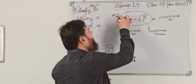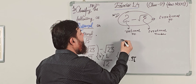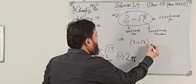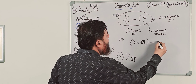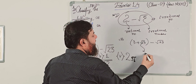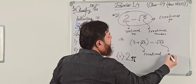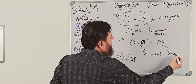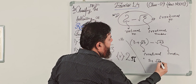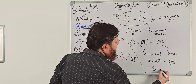So question number 1, first part: the answer is irrational. Now moving to the second one: 3 plus root 23 minus root 23. You see here root 23 is irrational and root 23 is also irrational. But 3 plus root 23 minus root 23 — the root 23 terms cancel, and the result is 3, which is a rational number.